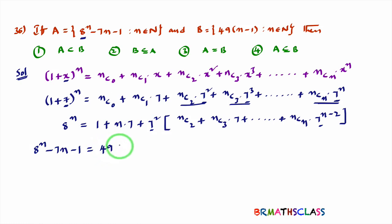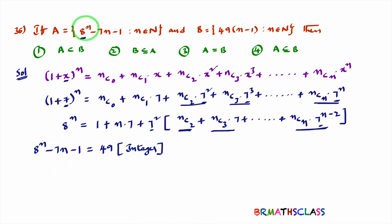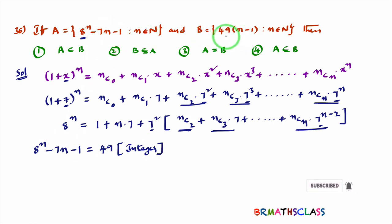What is 7 square? It is 49. Each term inside the bracket — nc2, nc3 into 7, and so on — is an integer. The sum of all integers is again an integer. So 8 power n minus 7n minus 1 is a multiple of 49. This means every element of set A is a multiple of 49, and set B also consists of multiples of 49.